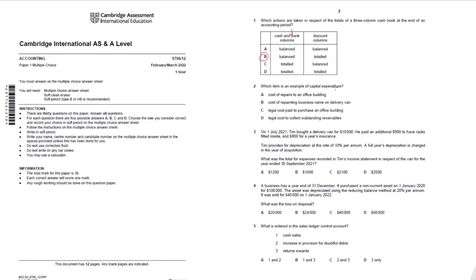Which item is an example of capital expenditure? Cost of repairs to an office building is revenue expenditure — any repairs to an existing non-current asset are always revenue expenditure. Cost of repainting a business name on a delivery van is also revenue expenditure. Legal cost paid to purchase an office building — when you buy a non-current asset, any incidental cost paid to complete that purchase is also capital expenditure, so option C is correct. Legal cost to collect outstanding receivables involves no non-current asset, so it is not capital expenditure.